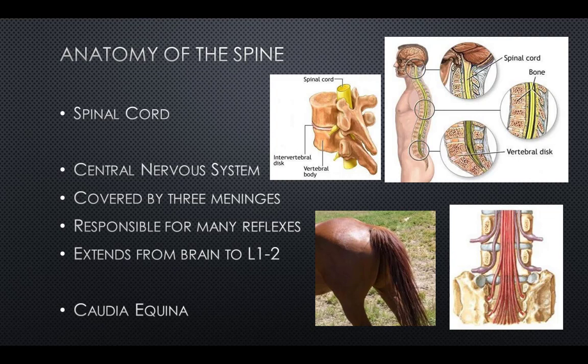The enclosing bony vertebral column protects the relatively shorter spinal cord. The spinal cord functions primarily in the transmission of neuronal signals between the brain and the rest of the body, but can also contain neuronal circuits that independently control numerous reflexes and central pattern generators. The spinal cord has three major functions: as a conduit for motor information traveling down the spinal cord, as a conduit for sensory information in the reverse direction, and as a center for coordinating certain reflexes.